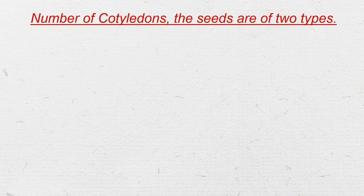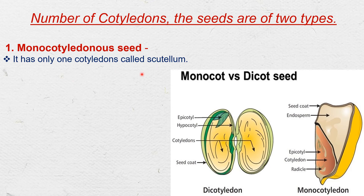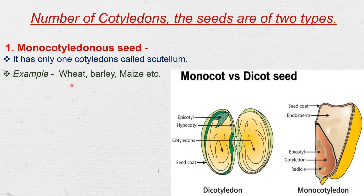On the basis of number of cotyledons, seeds are of two types. First is the monocotyledon seed — it has only one cotyledon called the scutellum. For example, wheat, barley, maize, etc.